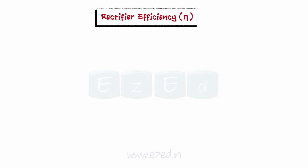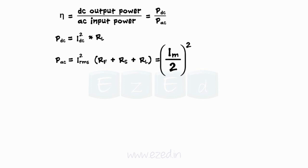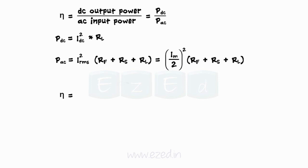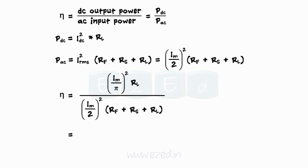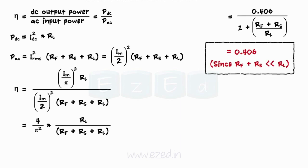The rectifier efficiency is the ratio of DC output power to AC input power. DC output power is IDC²·RL and AC input power is IRMS²·(RF + RS + RL). Substituting the values and solving, eta = 0.406 / (1 + (RF + RS)/RL). Neglecting RF and RS, eta = 0.406. Thus the half-wave rectifier gives 40.6% efficiency.